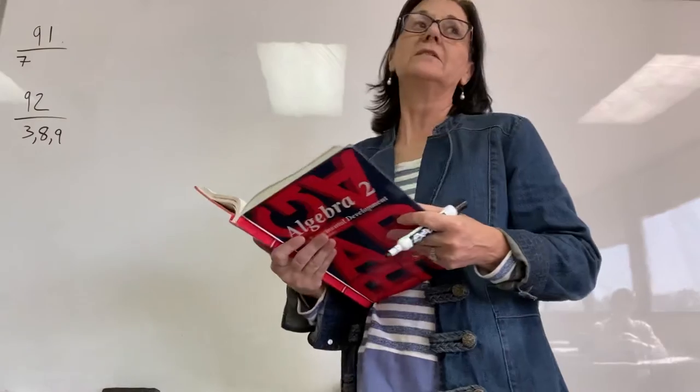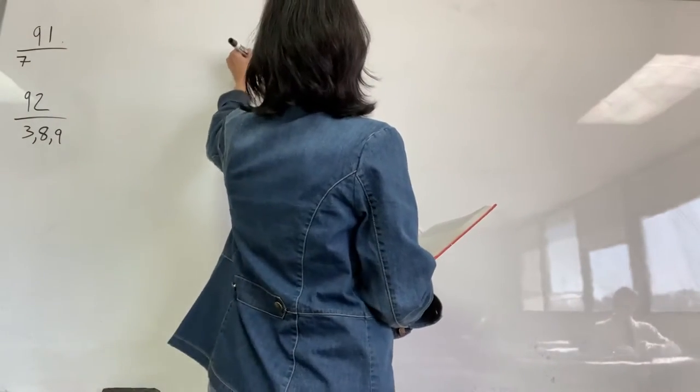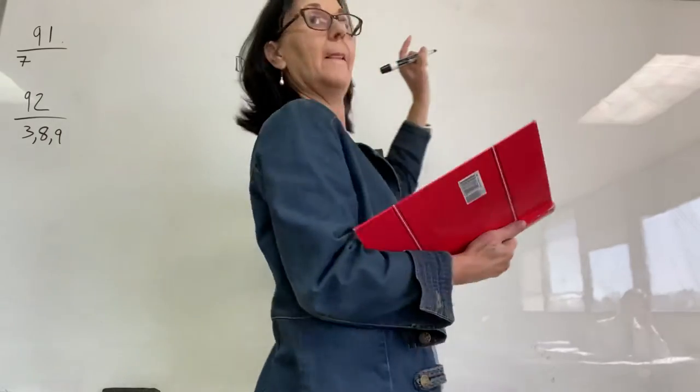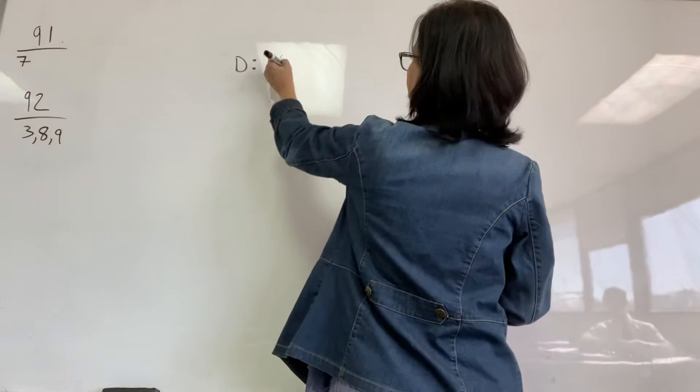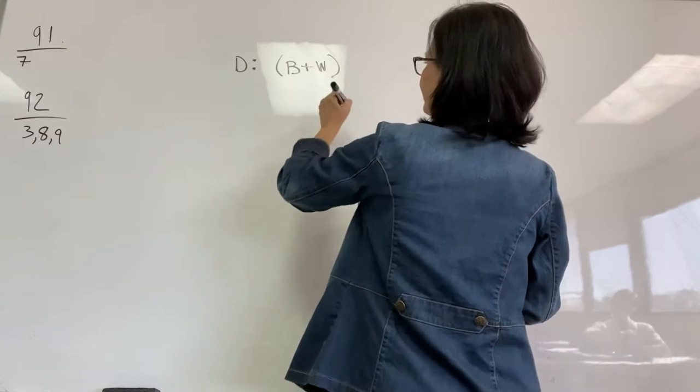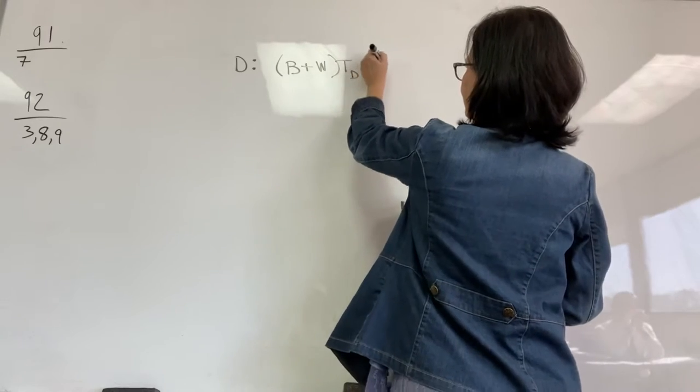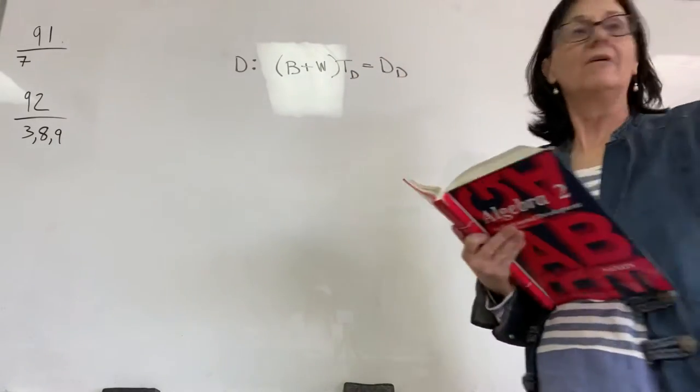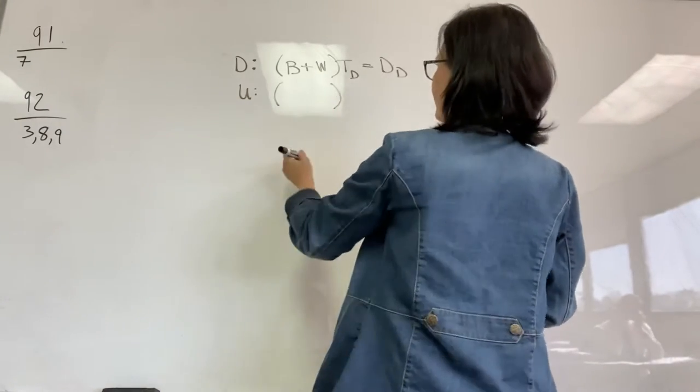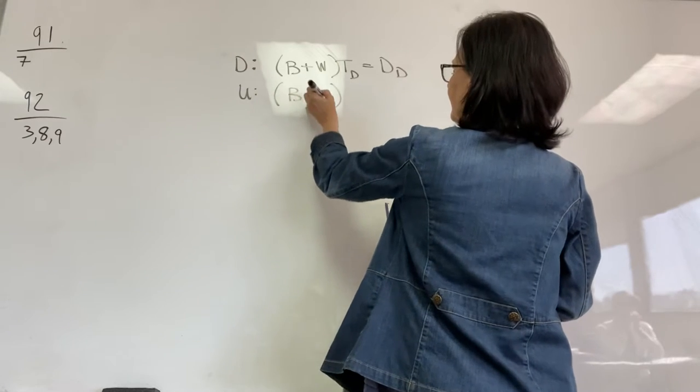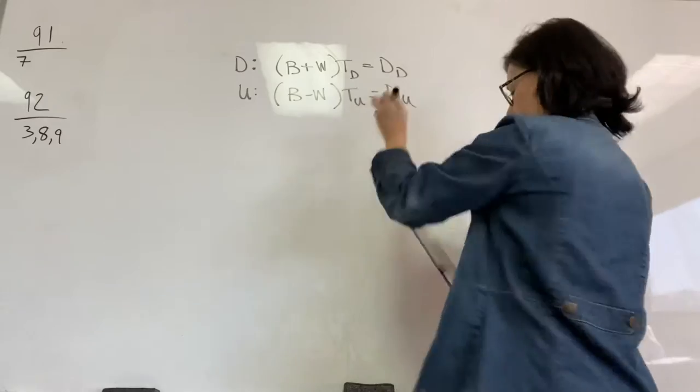All right, we've got the boat and the water. Somebody tell me the two equations for the boat and the water. What's downstream? What's that equation? Yes, the equation is W plus B times time equals distance. That's downstream. All right, what's upstream, Corey? That's B minus W times time. Okay, very good.